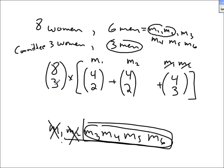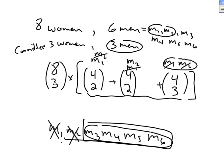The answer is C(8,3) times the sum of the three cases: C(4,2) for picking M1 but not M2, plus C(4,2) for picking M2 but not M1, plus C(4,3) for picking neither M1 nor M2.